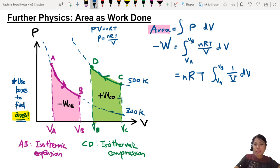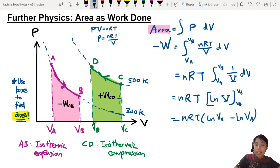So when you integrate 1 over V, you get what we call the natural log, ln V. And you can leave this outside. So this will be VB, VA. So if we plug in the values, we will get nRT ln VB minus ln VA. And this can be combined into nRT ln VB over VA.